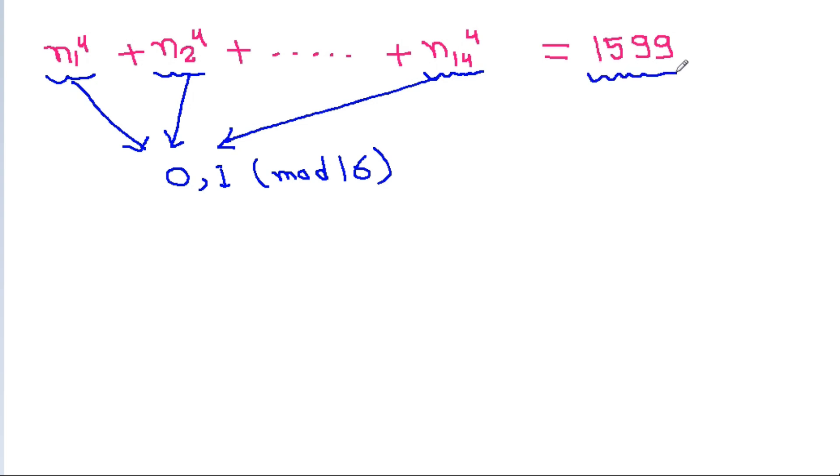And 1599 is 15 mod 16. And the maximum value of the left-hand side will be 14 mod 16.